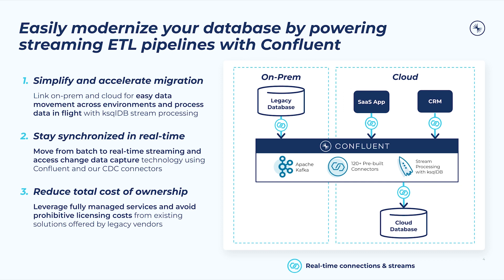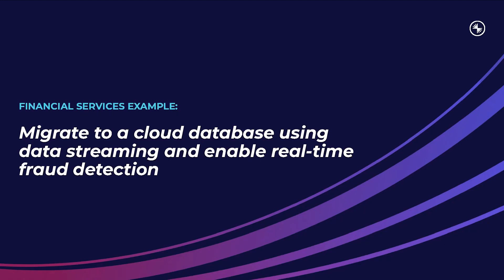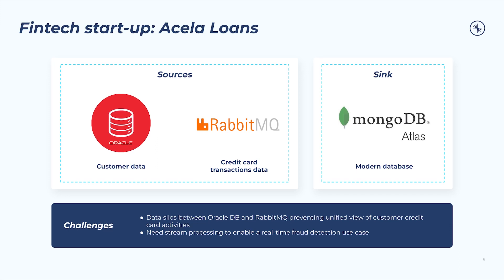Let's get on with an example where we'll show you how to bring this use case to life. Let's look at a pretend fintech company — we'll call them Acela Loans — and how they go about their database modernization journey by migrating data from Oracle Database and RabbitMQ to MongoDB Atlas in the cloud. Acela Loans recently acquired a small bank that uses Oracle DB to store sensitive customer information and RabbitMQ as the message broker for credit card transaction events. They want to perform real-time credit card fraud detection analysis and push suspicious activity flags to MongoDB Atlas, their modern cloud-native database that powers their mobile app in-app notifications.